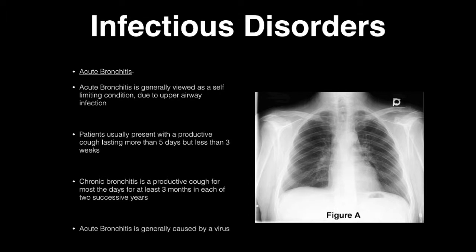Acute bronchitis is generally a self-limiting condition due to an upper airway infection. Patients usually have a productive cough lasting more than five days but less than three weeks. Chronic bronchitis is a productive cough that lasts for most of the days of the month for three consecutive months, in each of two successive years.